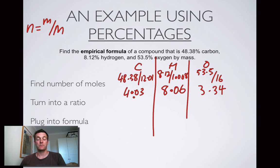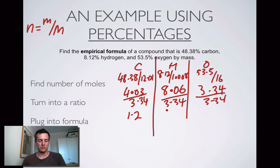So now, what are we going to do? We're going to divide them all by the smallest one. And that gives us 4.03 divided by 3.34 is 1.2. This one, 8.06 divided by 3.34 is 2.4. And this one is 1. Now how are we going to get them into whole numbers?